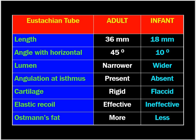In the adult Eustachian tube, the angle with the horizontal is around 45 degrees, whereas in the infant the angle with the horizontal is around 10 degrees.